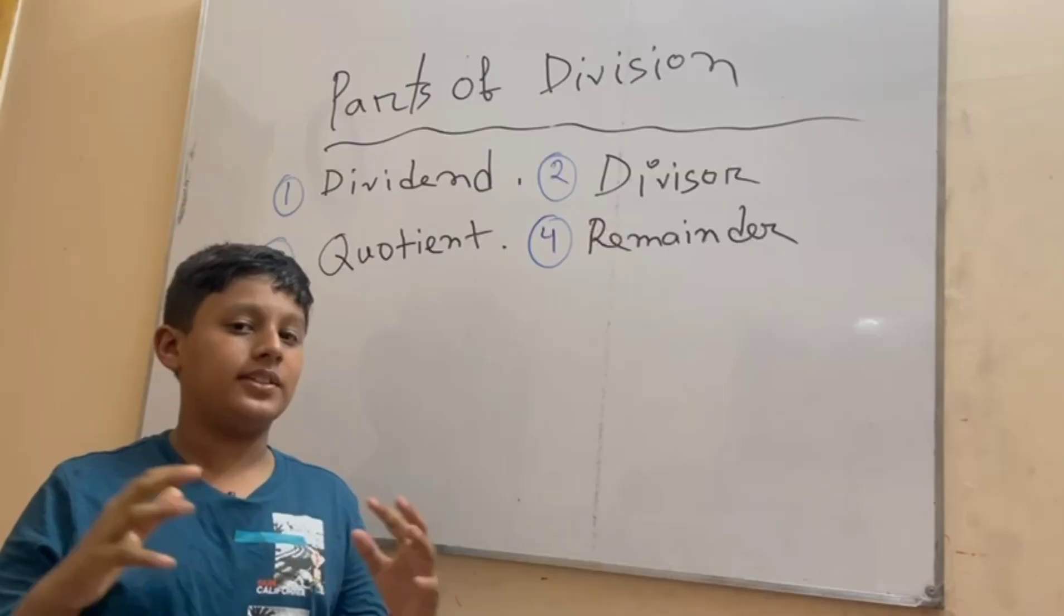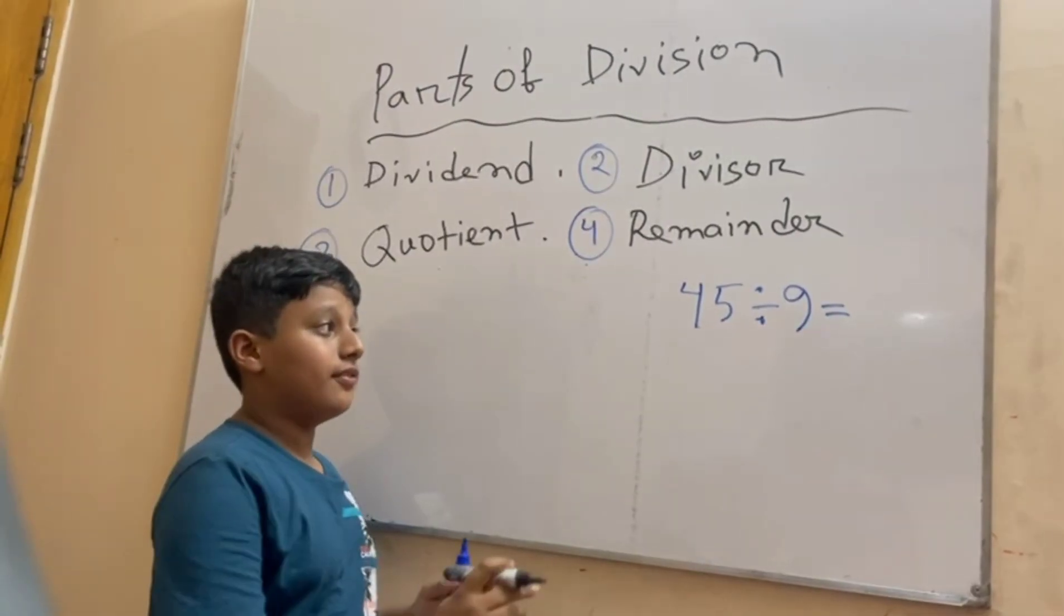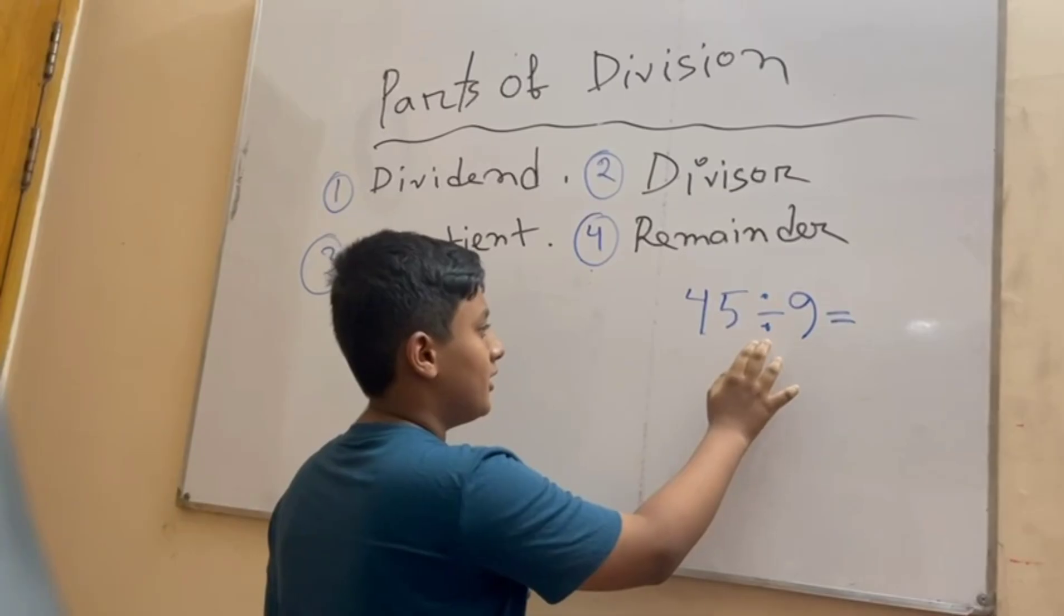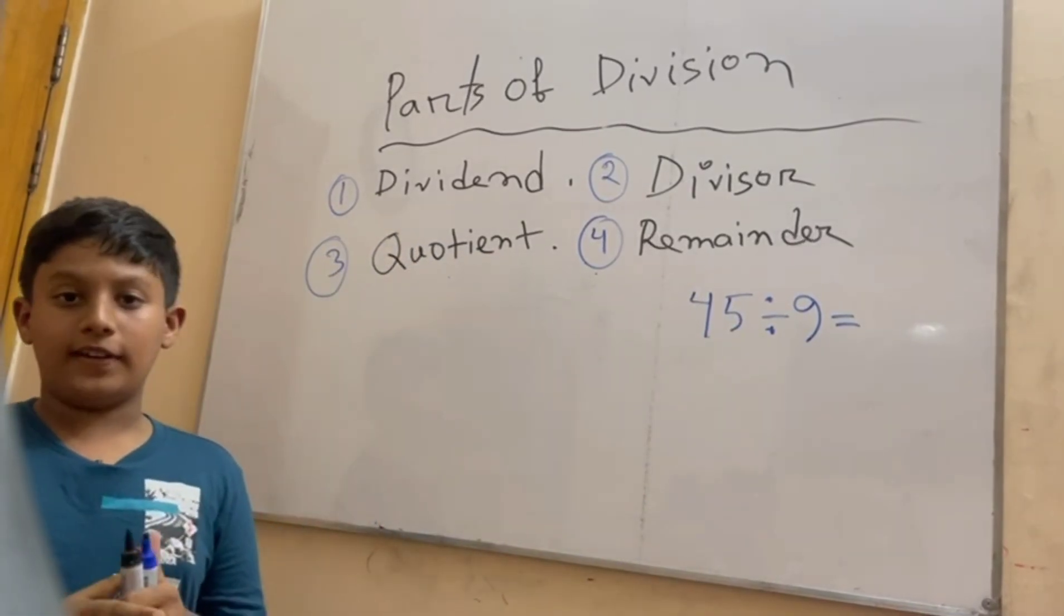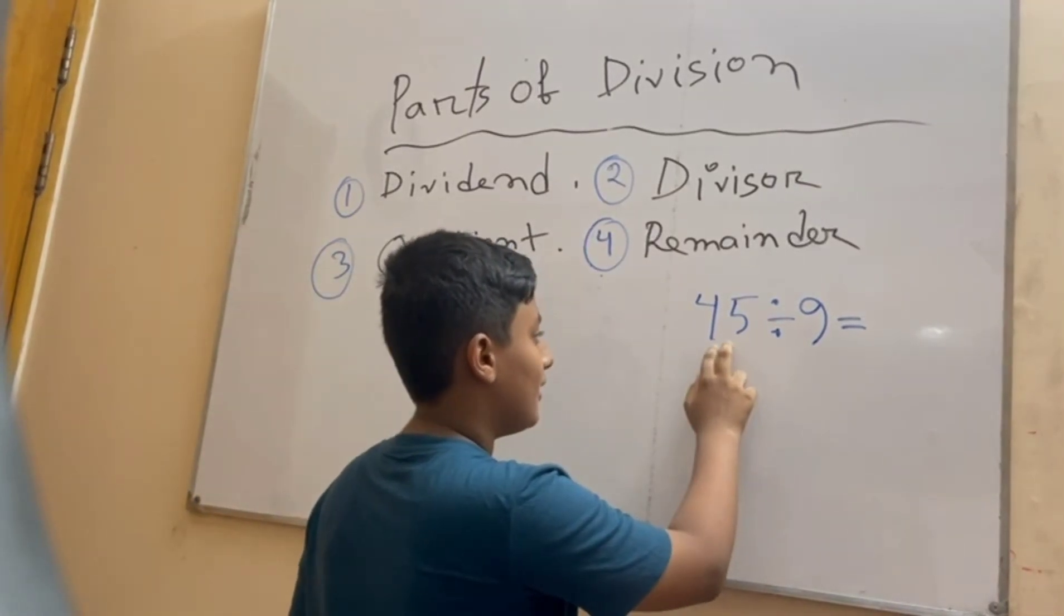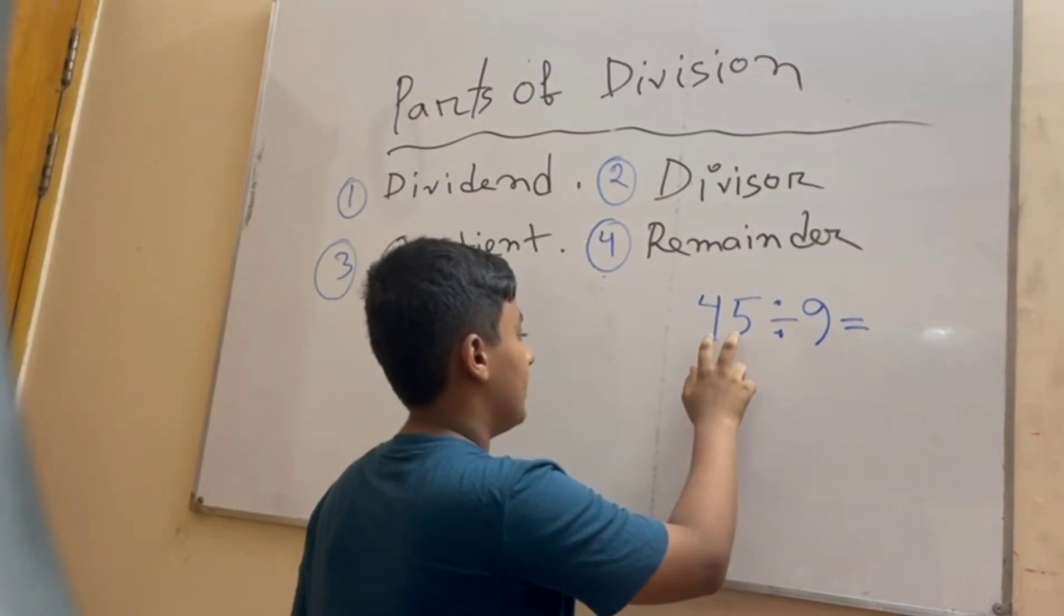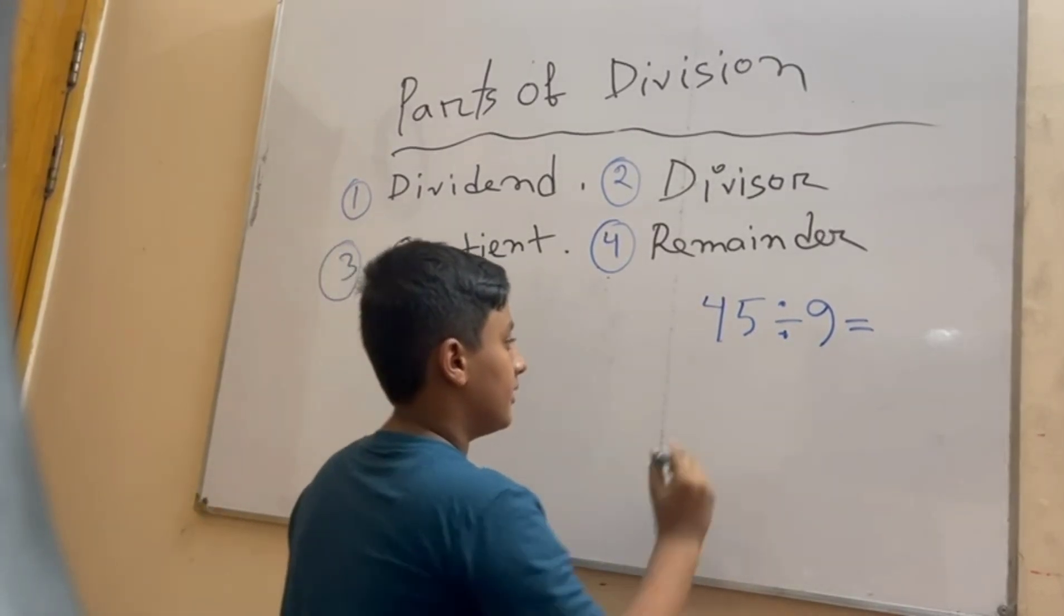And now we're going to learn these divisions with an example. Now let's look at the division 45 divided by 9 equals blank. In here we're going to identify the parts. 45, we are dividing 45. The number we are going to divide is the dividend.